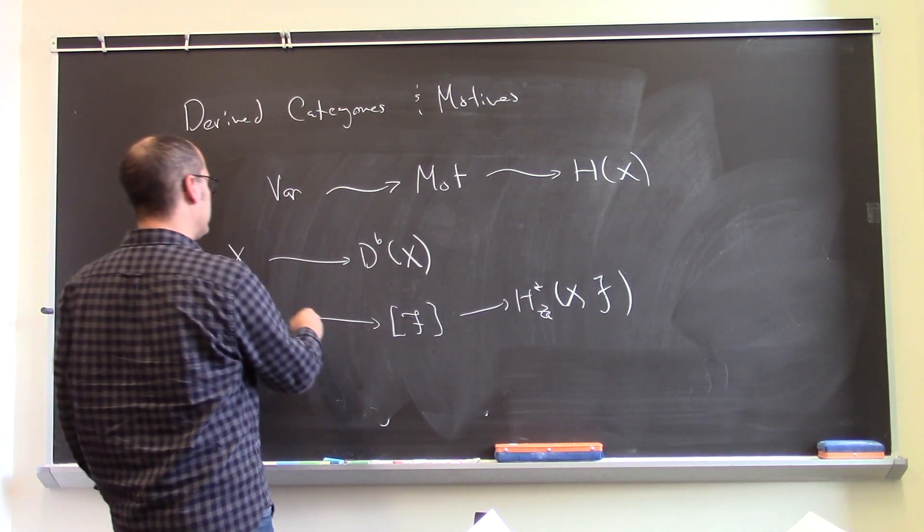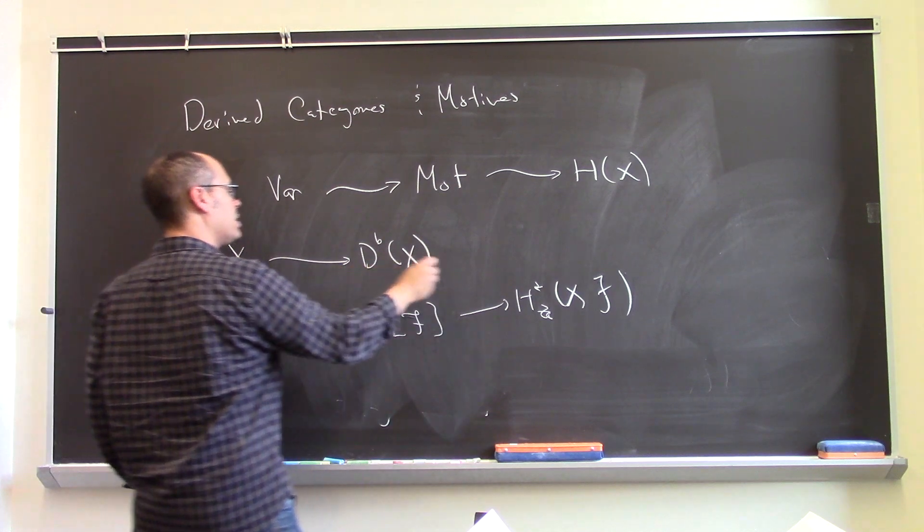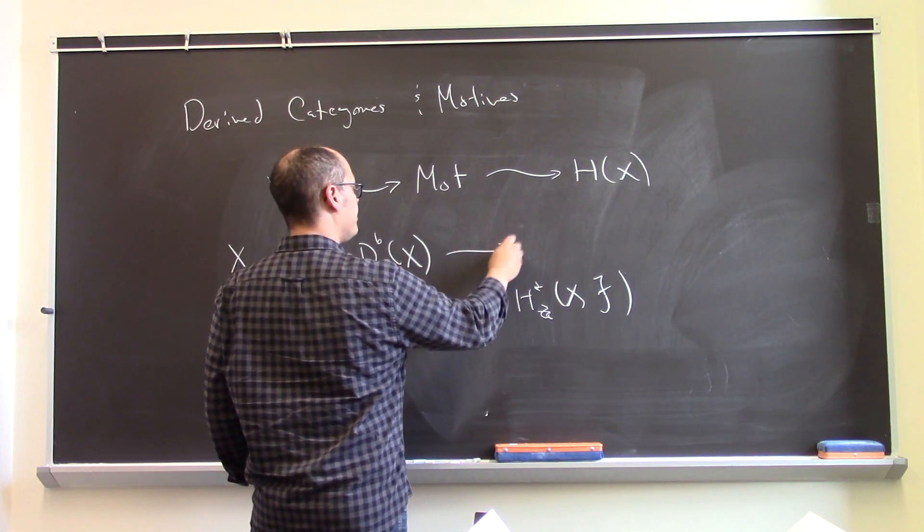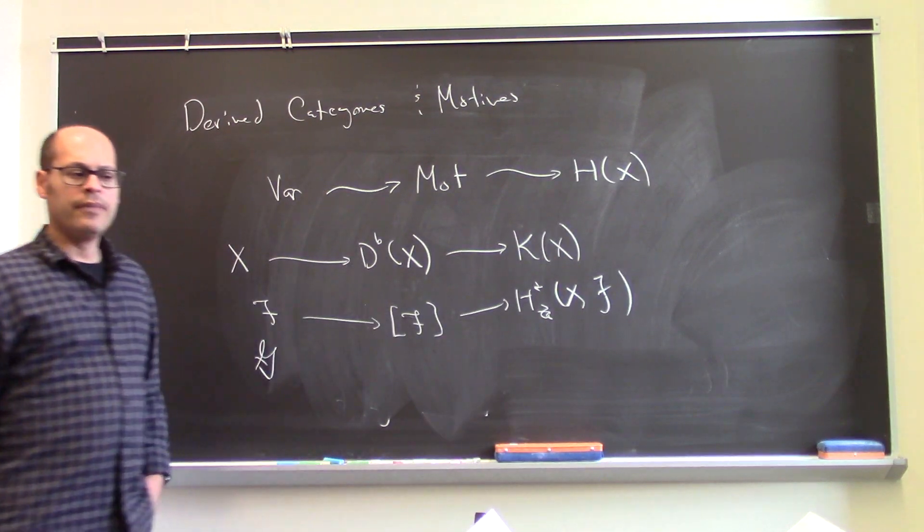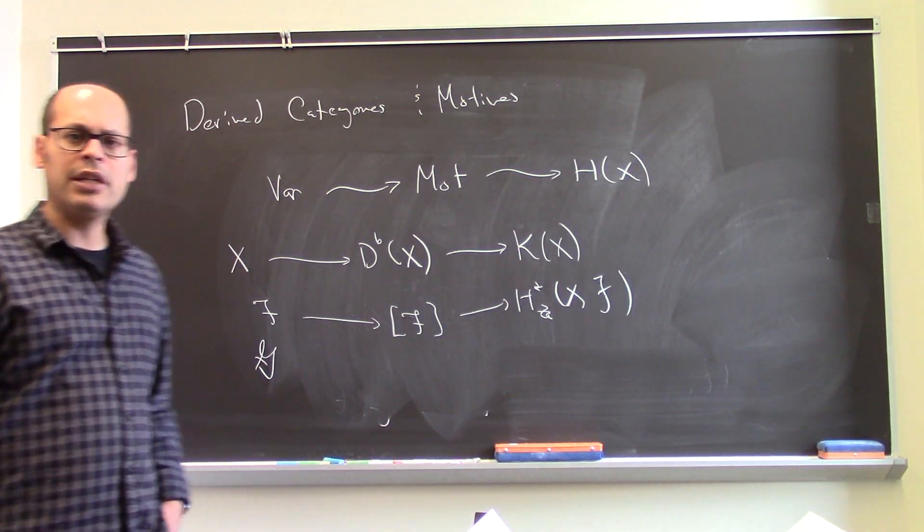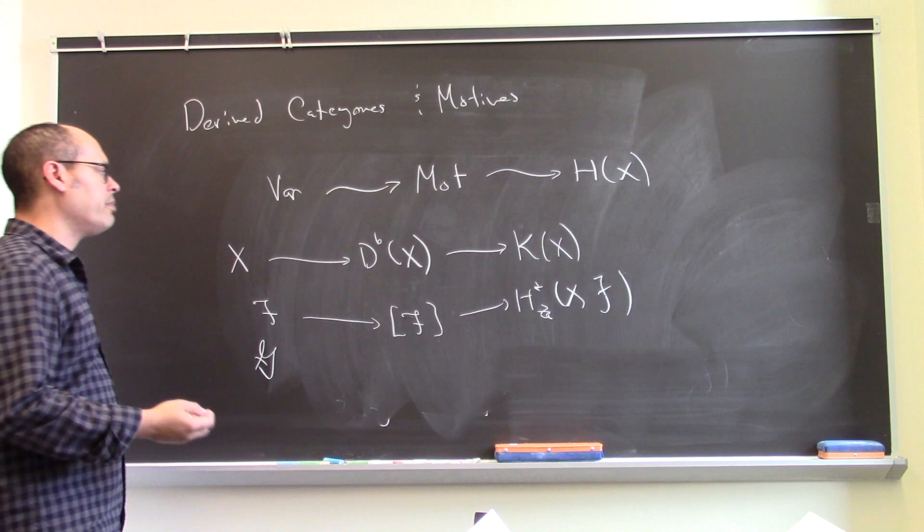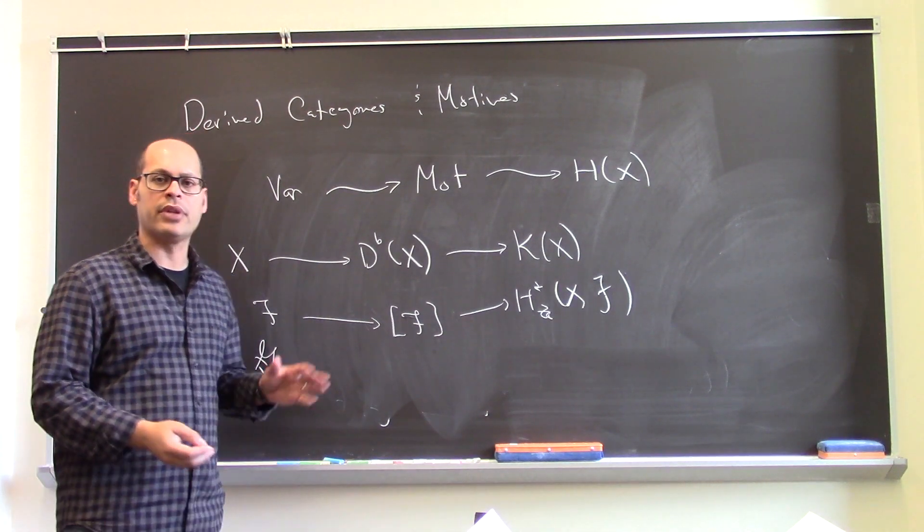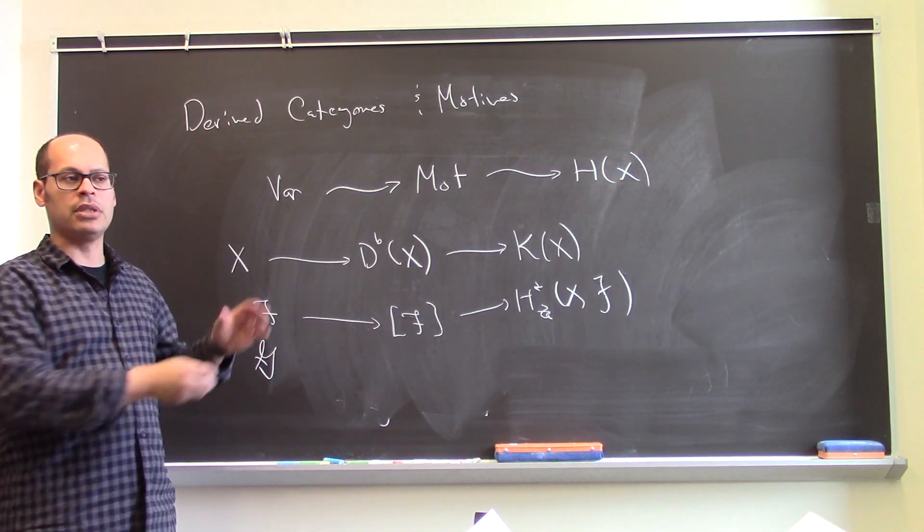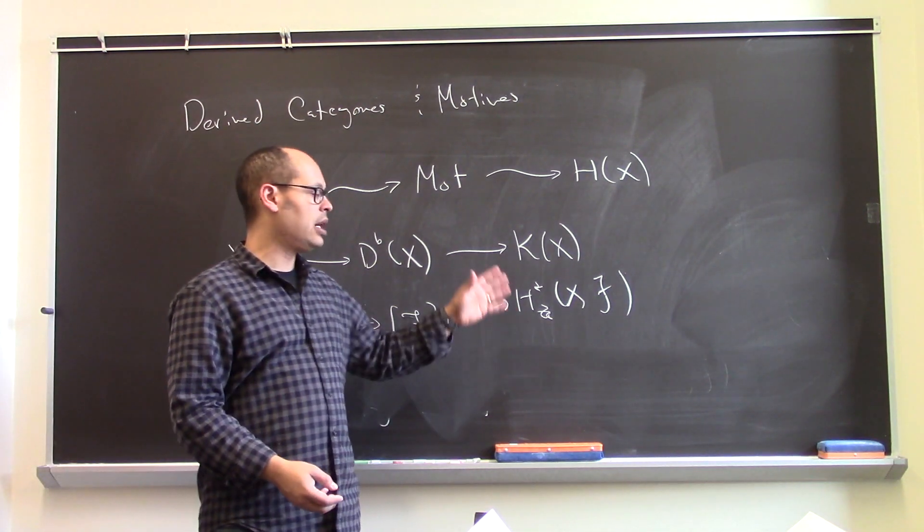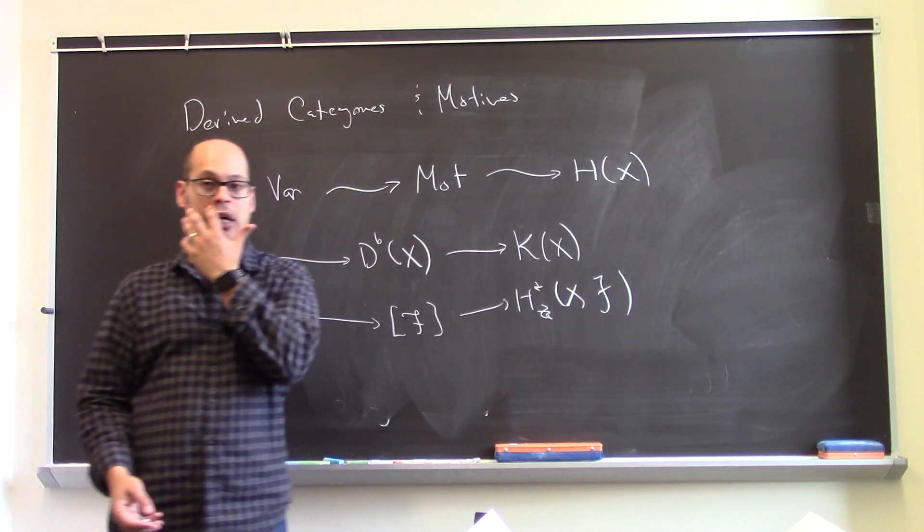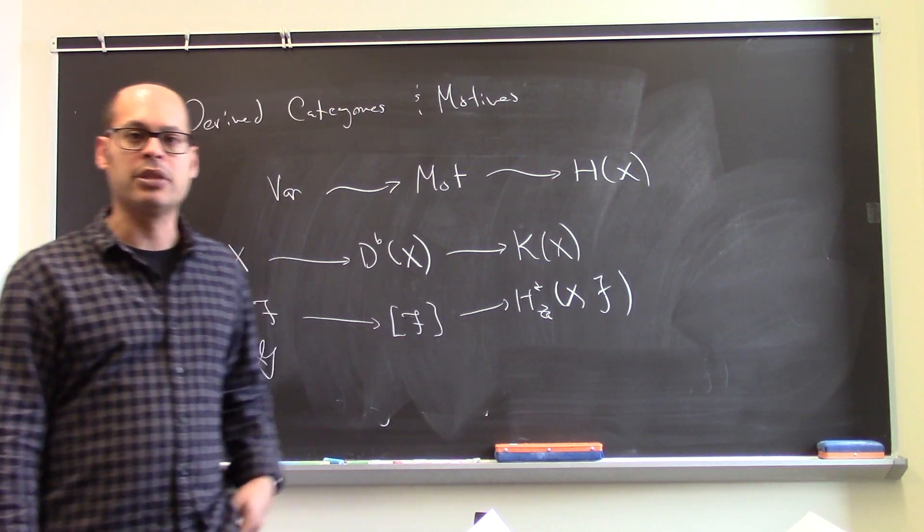Also, the derived category sits in between the variety X and its K-theory. And so you can kind of think about, in these ways, both the motive and the derived category as some sort of in-between objects, between these geometric things, varieties and sheaves, and these measurements that you take on them, these kind of cohomological type measurements.